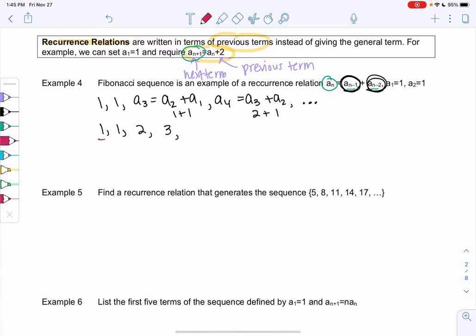Maybe we can see the pattern without the formula now. We got 2 from doing 1 plus 1. We got 3 from doing 1 plus 2. So then my next term would be 2 plus 3, or 5. And then my next term would be 3 plus 5, or 8.